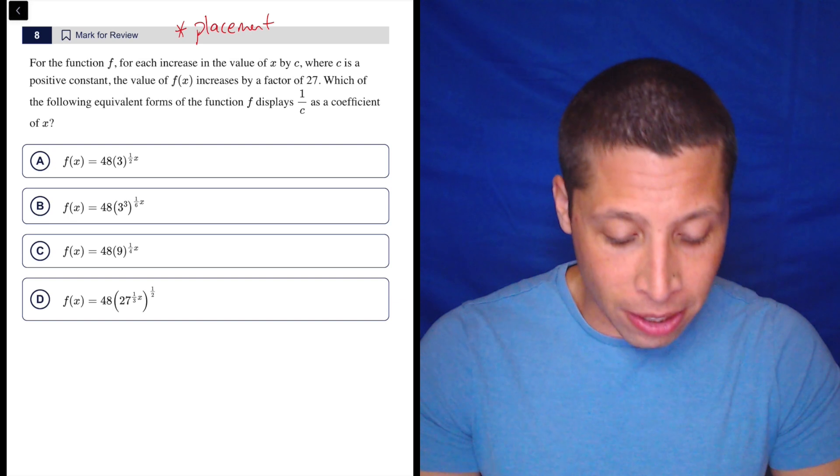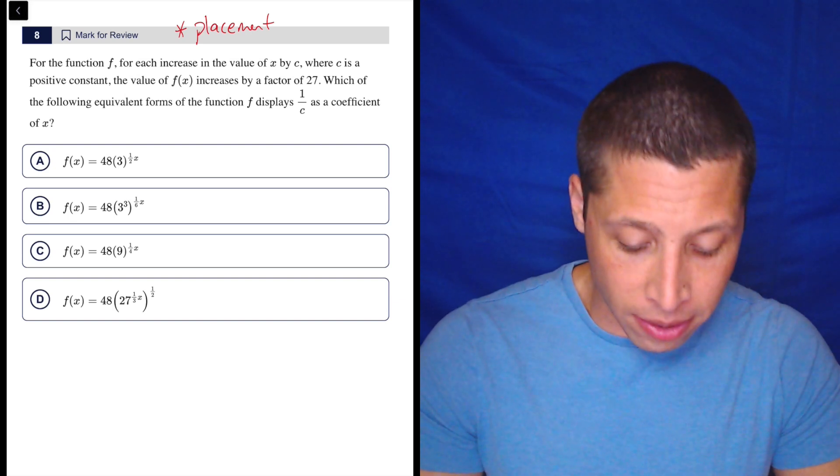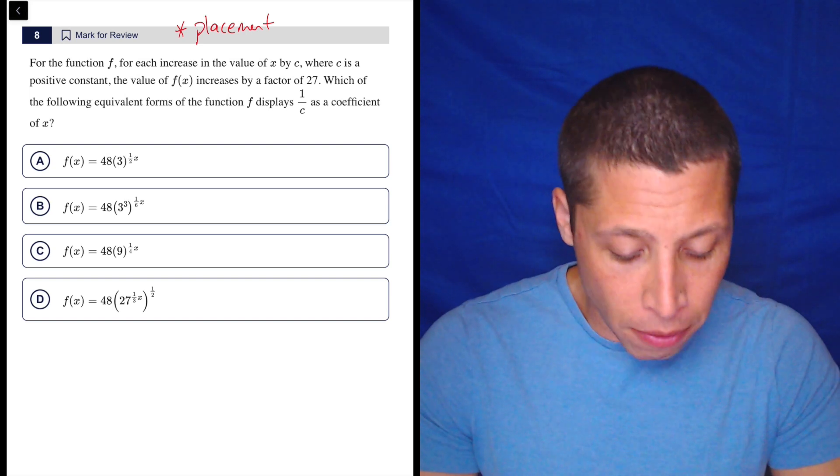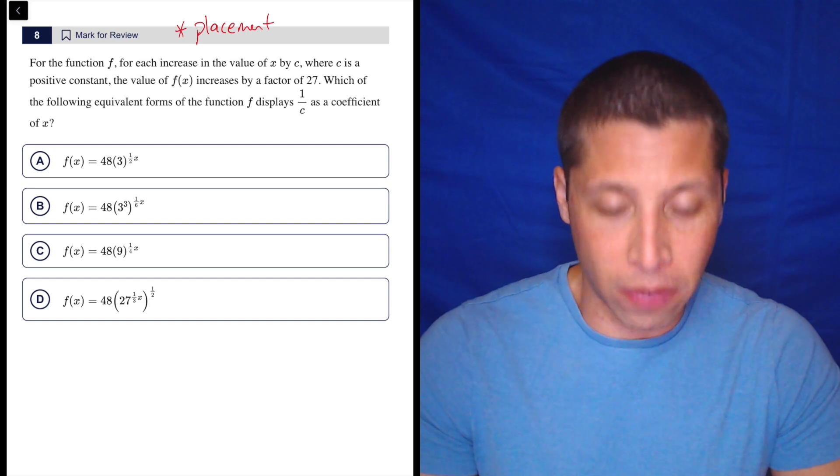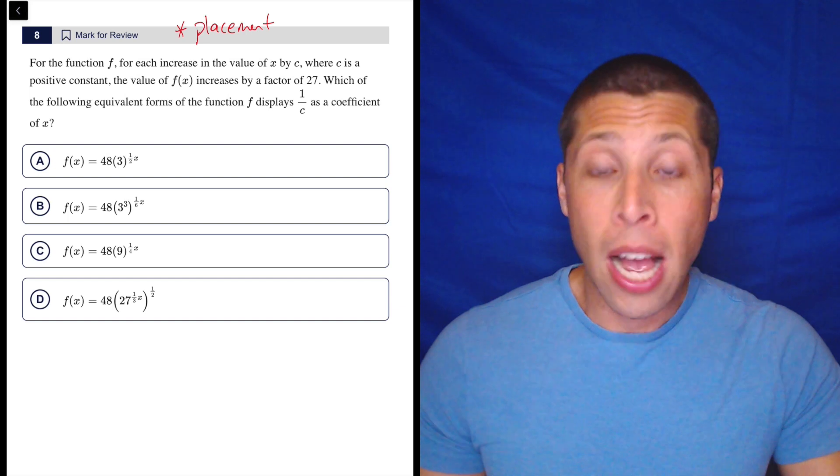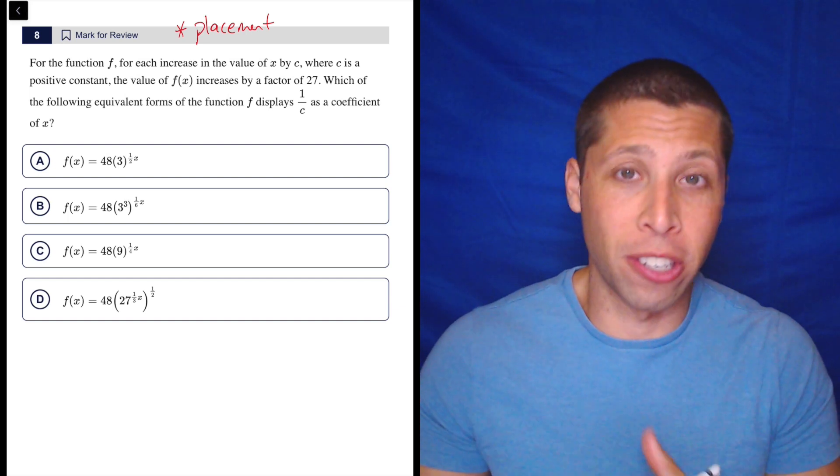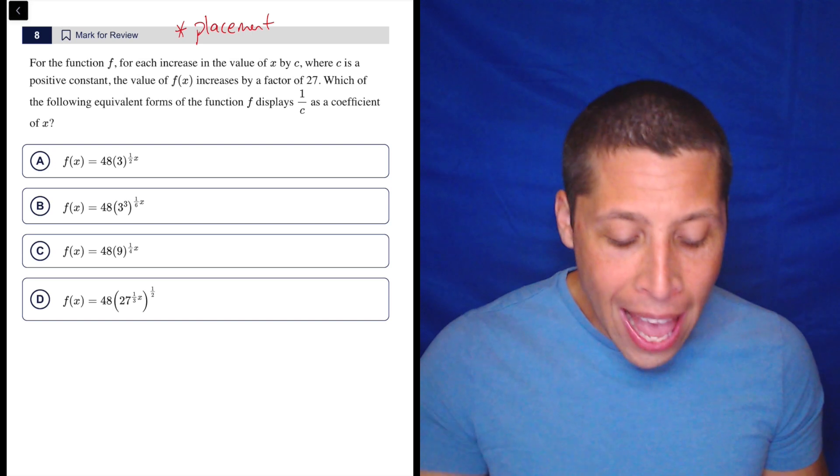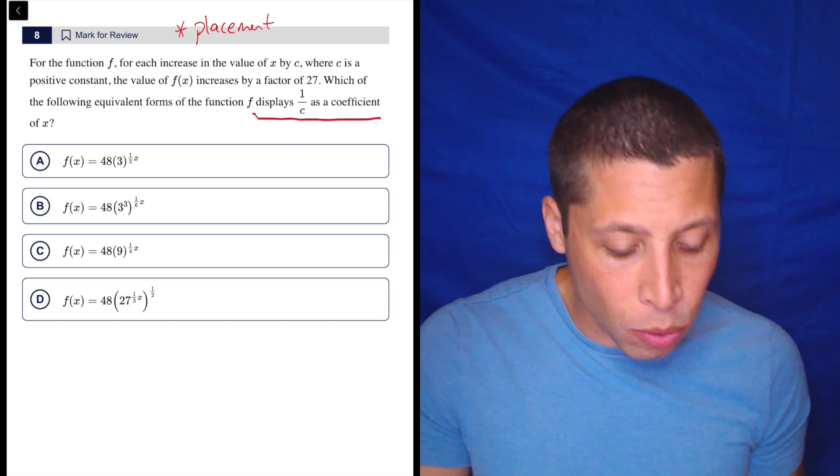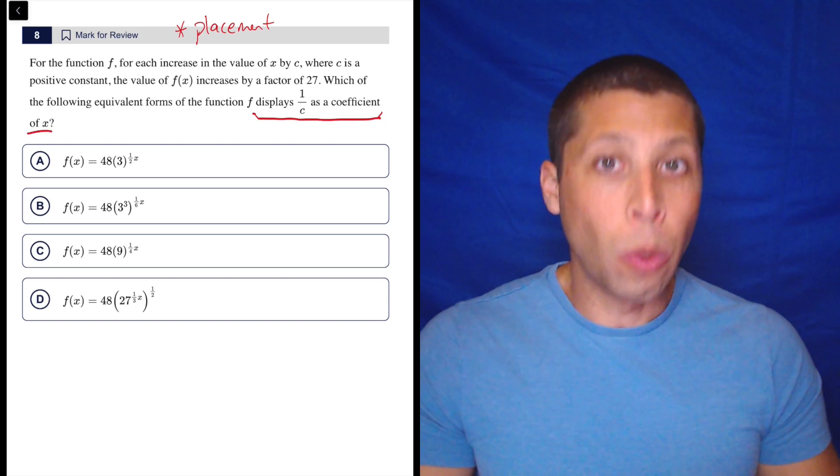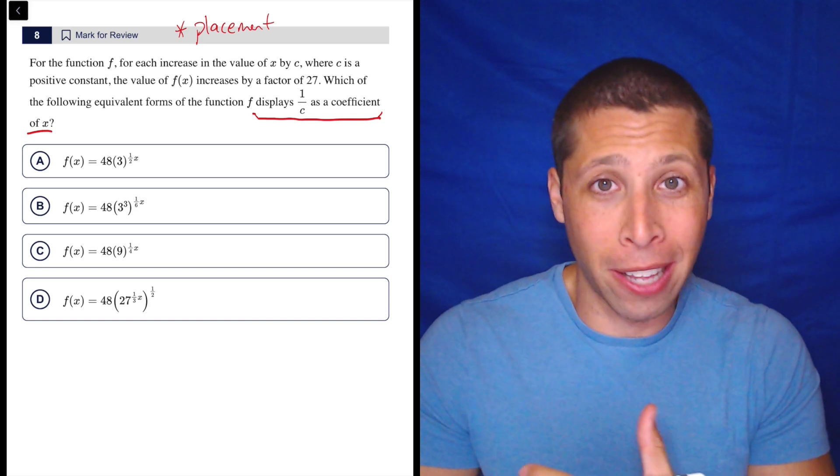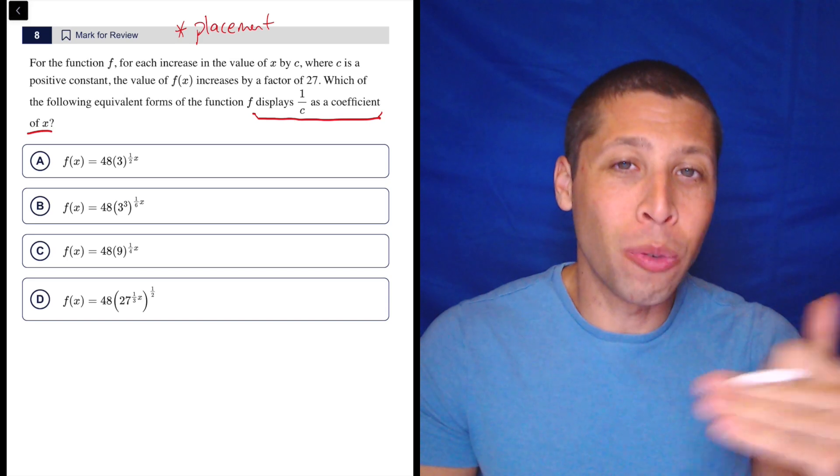For the function f, for each increase in the value of x by c, where c is a positive constant, the value of f(x) increases by a factor of 27. That means multiplies. Which of the following equivalent forms of the function f displays 1/c as a coefficient of x. So my first instinct reading this is I'm going to arithmetize, make up whatever number I want for c, pick a point and see how it changes. But it's the end here that kind of limits us in a way I didn't think about at first.